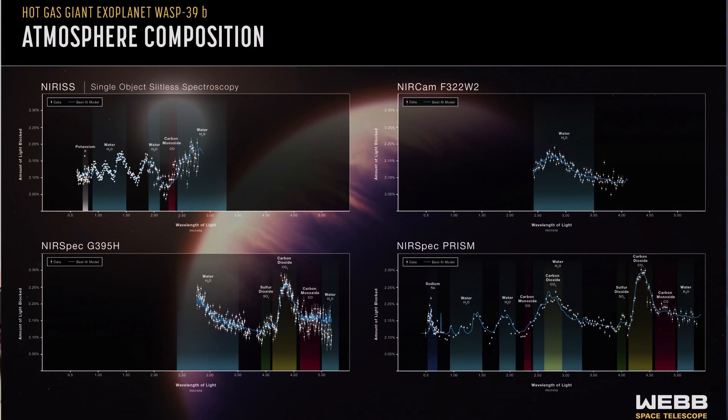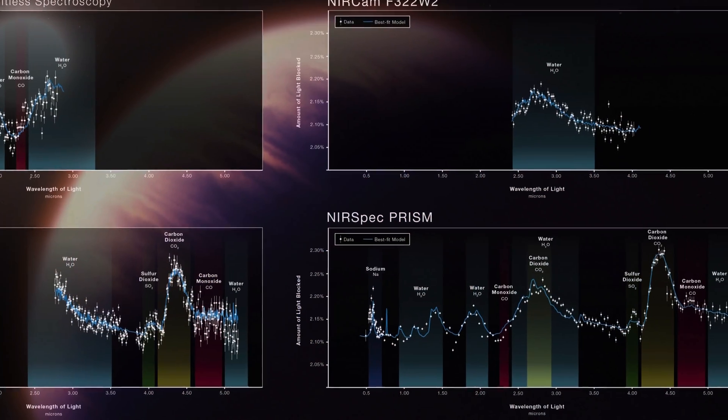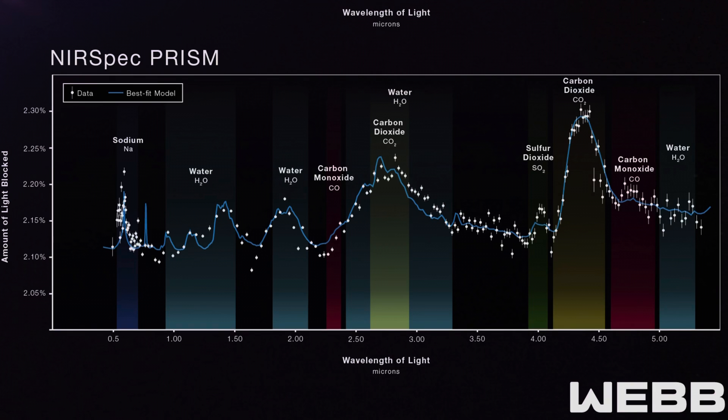The latest data from James Webb is pretty exciting and that is because it shows what exact elements are present in the atmosphere. In the case of WASP 39b, the planet that I'm discussing right now, for the first time ever we have detected compounds like sulfur dioxide, carbon monoxide, carbon dioxide, and even elements such as sodium.